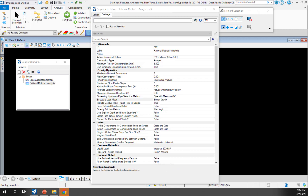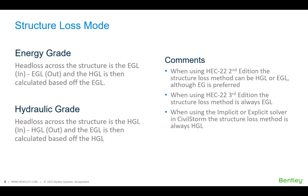Next, we'll specify the basis for the structure loss node, and that's either going to be based on the energy grade line or the hydraulic grade line. If you're using the energy grade line, the head loss across the structure is going to be the EGL in minus the EGL out, and the HGL is going to be calculated based off of the EGL.